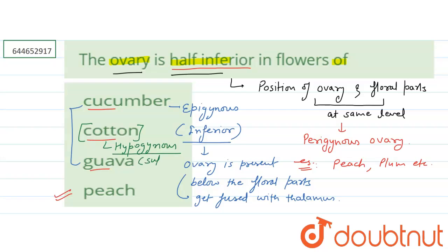In the case of cotton, it has a superior ovary, which is known as the hypogynous ovary. This means the ovary is present at the top while the other floral parts are present just below it.